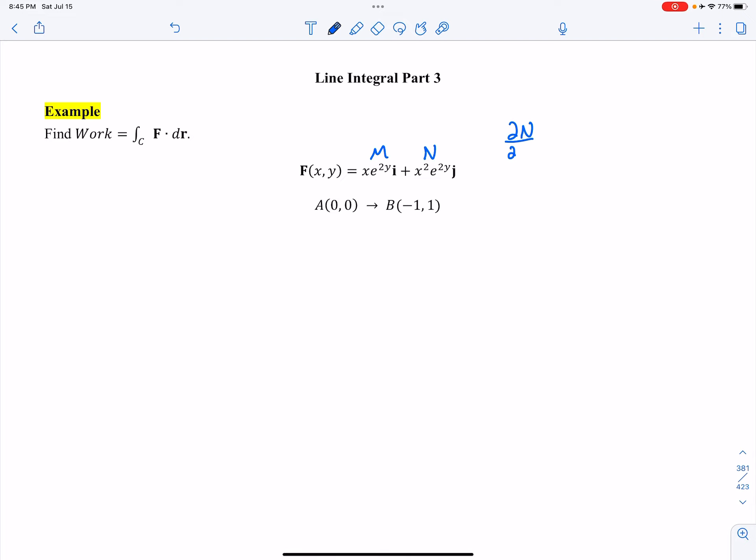The partial in respect to X is going to be 2XE to the 2Y. M with respect to Y is going to be the 2 comes out of the chain rule and I got 2XE to the 2Y. They're conservative. So F is conservative.